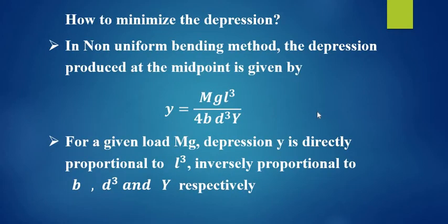How to minimize the depression? In non-uniform bending, the depression produced at the midpoint is given by y equal to Mg L cubed divided by 4Bd cubed Y.